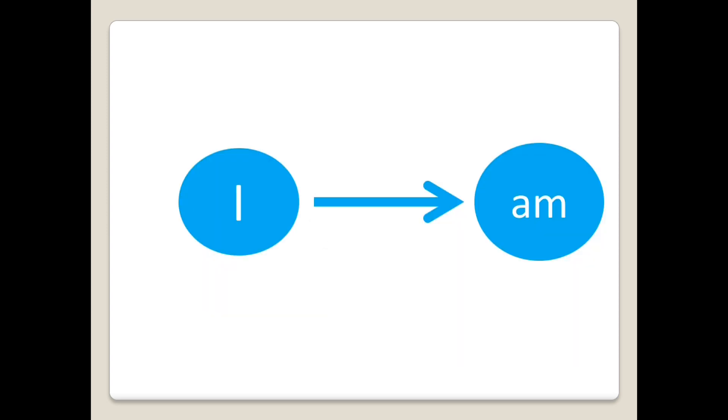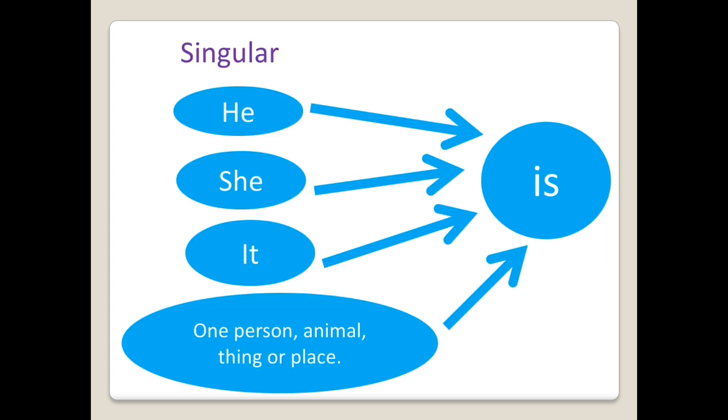Am is only used with I. We use is after he, she, it, or any singular noun.